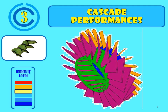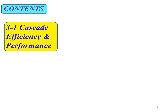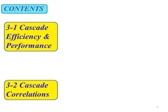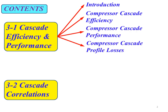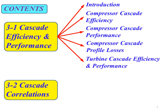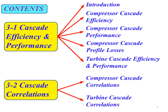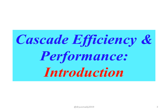In this chapter we will discuss cascade efficiency and also cascade correlation for turbine and also for the compressor. In terms of contents, we have two sub-topics: first is about cascade efficiency and performance; second is about cascade correlation, covering equations for turbine and also the compressor. Under the first topic we have an introduction, and we will also discuss the compressor cascade correlation and turbine cascade correlations.